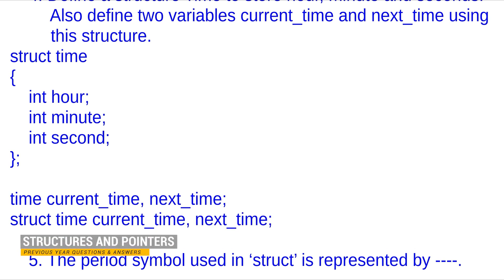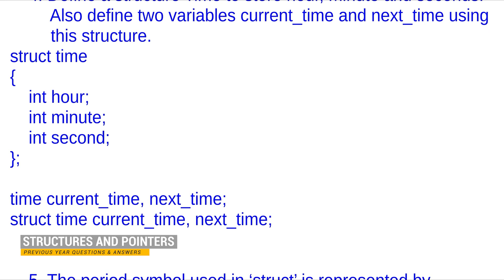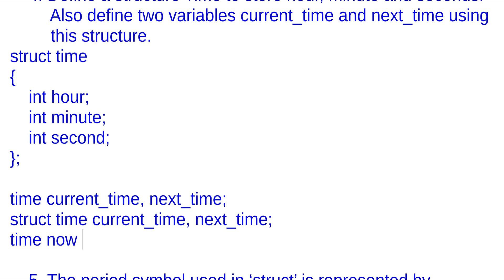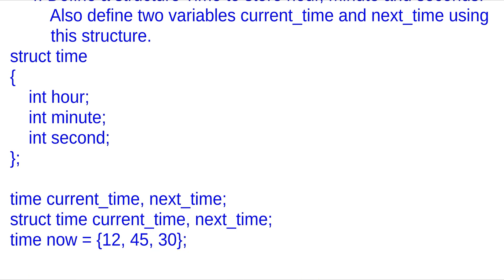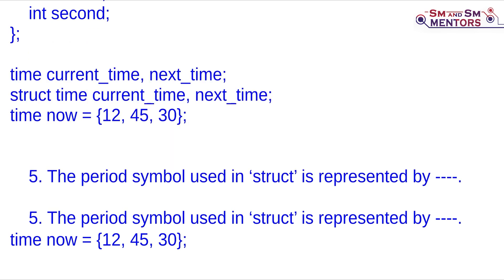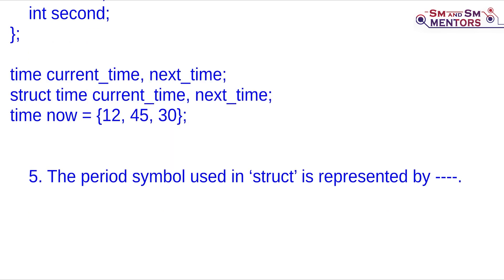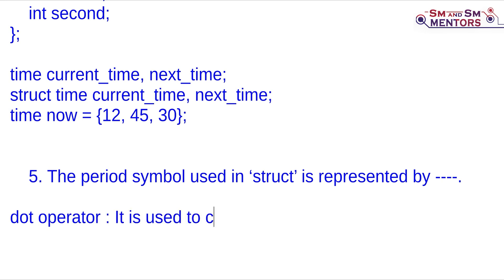For example, time_now is equal to 12 hours, 45 minutes, 30 seconds. We need to initialize the structure. The period symbol used in structure is the dot operator, which is used to access a structure member.